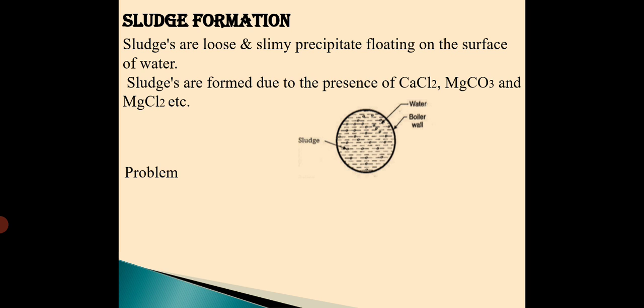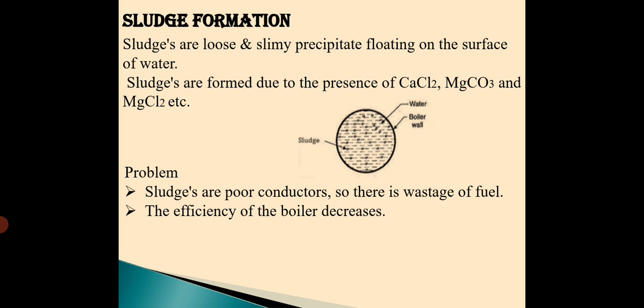What are the problems? The same problems like scaling - they reduce the efficiency of the boiler and also these sludges are poor conductors, so there is wastage of fuel. How to overcome this problem? The solution is you have to directly use soft water or we have to go for frequent blow down operation. What is frequent blow down operation? It is nothing but the removal of the salt concentrated water by opening the valve.